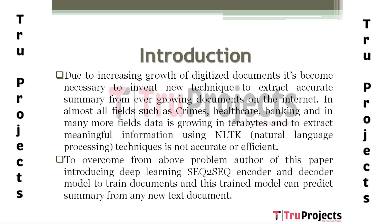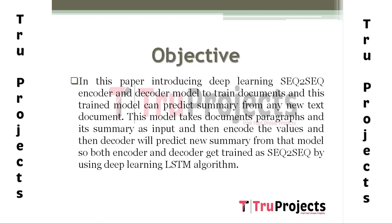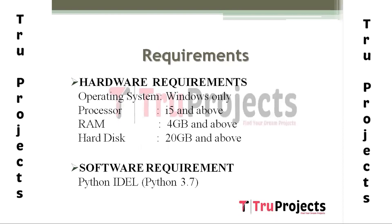The main objective of this project depends upon the text trained by the deep learning Seq2Seq encoder and decoder model. The trained model can predict the summary from any new text document.